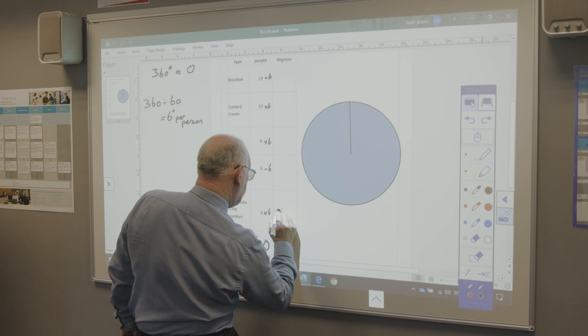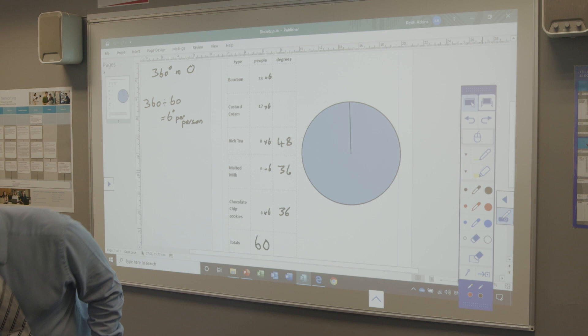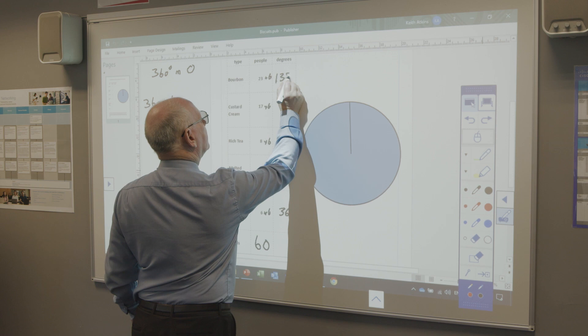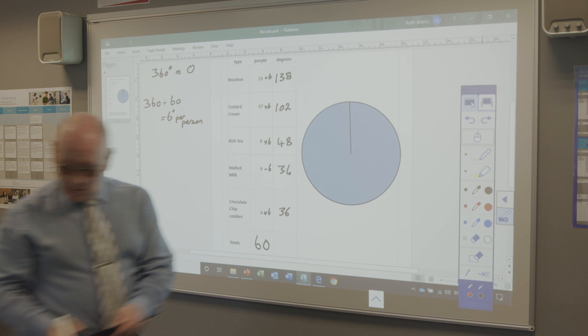Then you've got to multiply all of these by 6. So we've got 36, 36, 48, no idea and no idea. So get the trusty calculator out. 23 times 6 is 138. And 17 times 6 is 102 degrees.